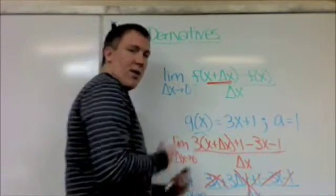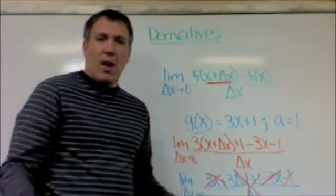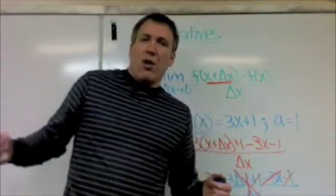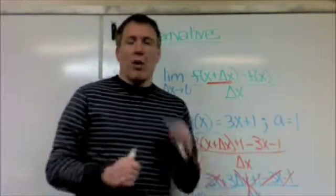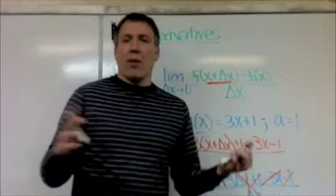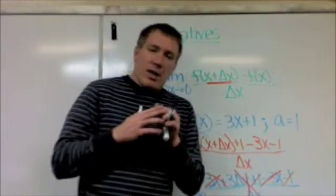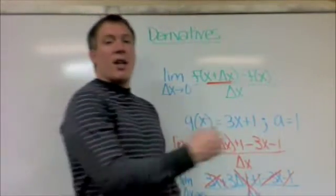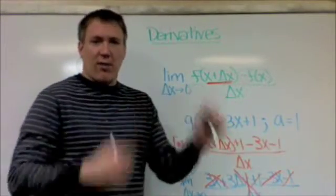Now, this is true everywhere because 3 is just a number. On the ones that we'll be doing, we'll get an equation. We'll get the slope of the tangent line equals 2x squared. Or, the slope of the tangent line equals the square root of x plus 1. We'll get some sort of equation. And, those things we'll be using to find the slope of the tangent line anywhere on that entire function.